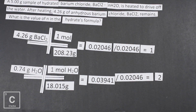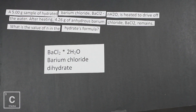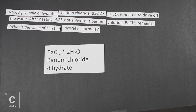Let's put those numbers to the formula and the name. We have barium chloride, BaCl₂ — that was the anhydrate — and then a dot, because the water is attached. So barium chloride with two waters attached, and we name that barium chloride dihydrate. Two waters — remember that prefix 'di' means two.